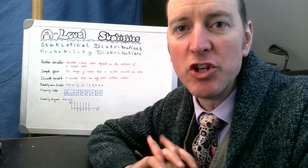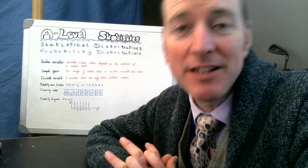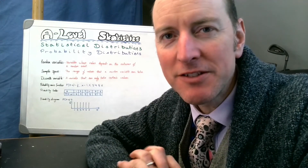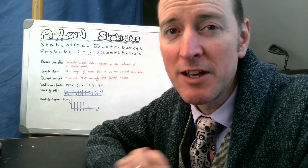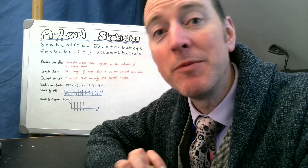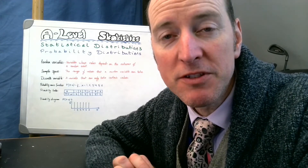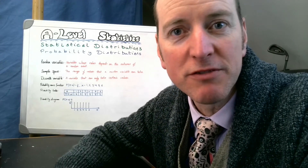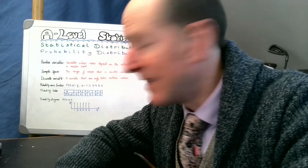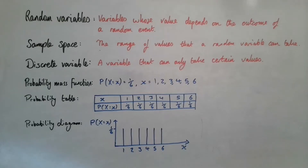Today we're starting a new chapter on statistical distributions, still within the realms of probability. It will take us to a place where we can work out probabilities of all sorts of things. To do that, we need to be familiar with one or two slightly different ways of writing down our results — looking at simple probability but with different ways of recording those results.